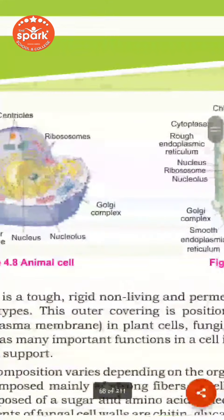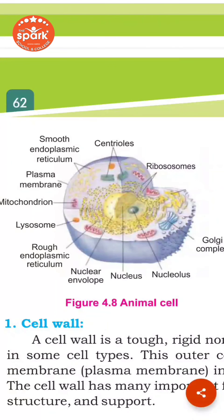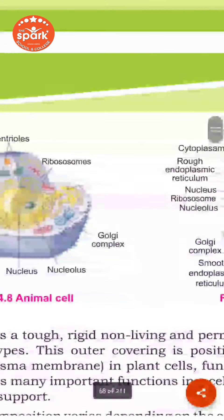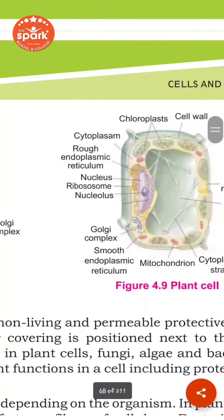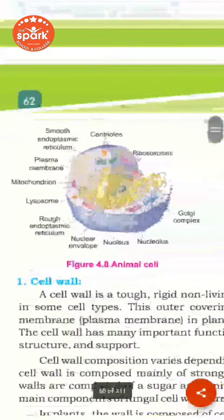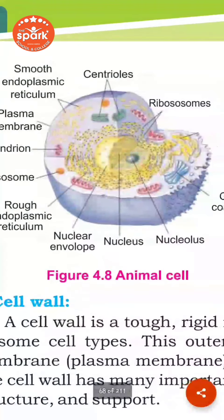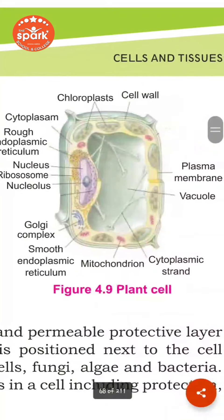You can see in the diagram that the animal cell has an oval or spherical shape — it is not rigid. The plant cell has a more square or rectangular shape due to the cell wall, which makes it rigid. So you can see the general structure of both the animal cell and the plant cell.